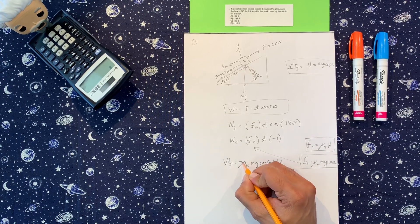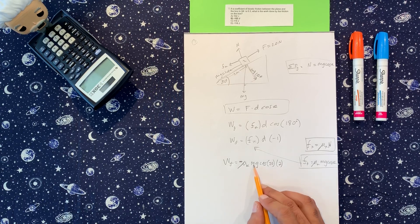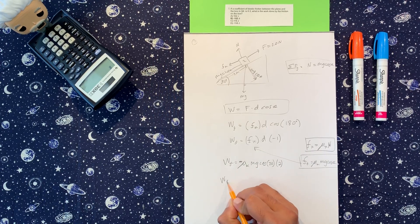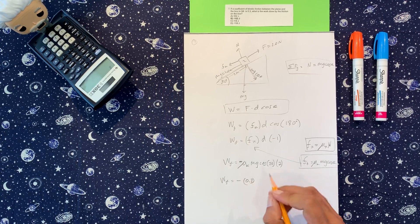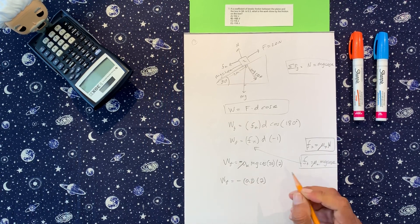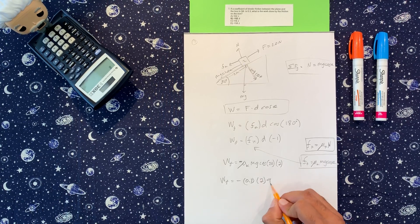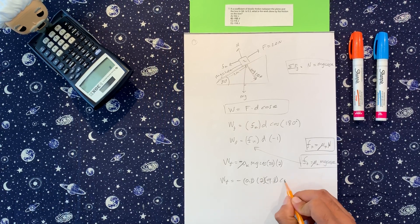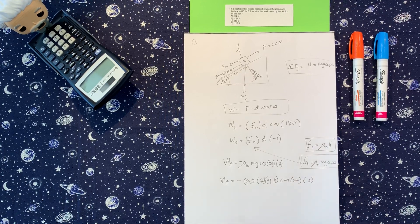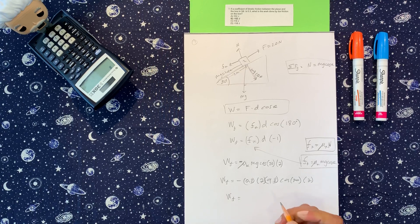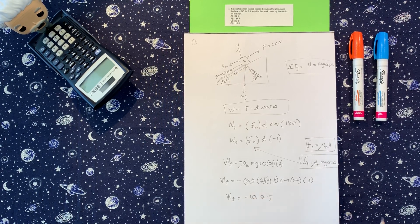So negative 1. We have the mass, which is 2. Let's just put all the numbers in. Negative 0.3, which was given. The mass of the block is 2 kilograms. We have 9.8 for gravity, cosine of 30, and times 2. So trusting your calculator, we should get negative 10.2 joules.